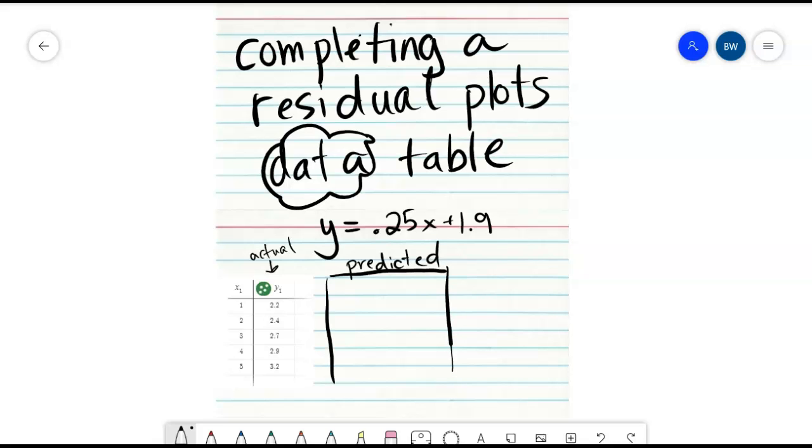The way that we're going to do that is we're going to take the x value, plug it into this line of best fit, and enter our values here into the predicted column. I'm going to do that - you work on that and press pause on the video right now.